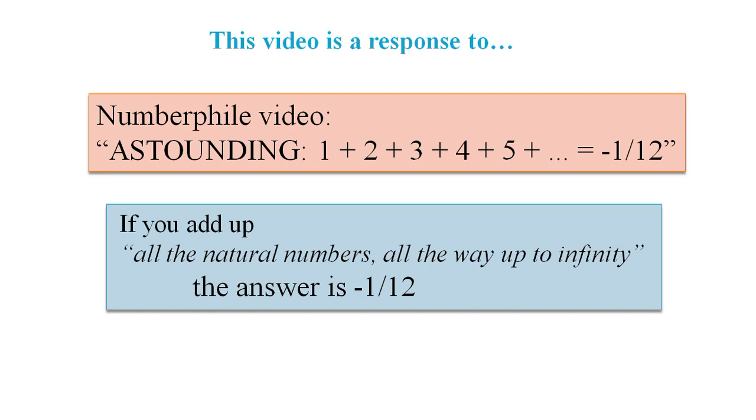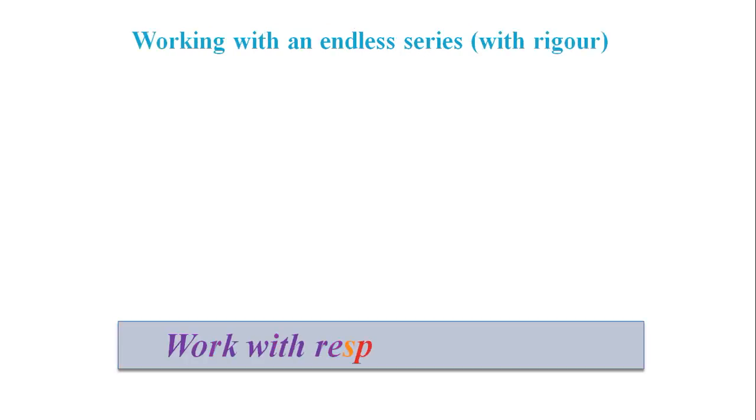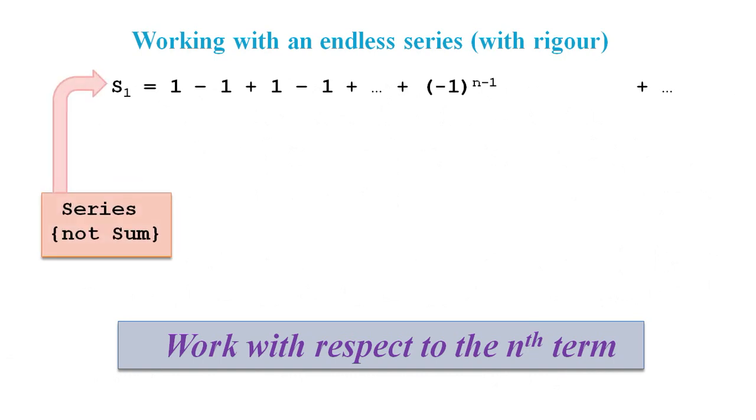First off, when we manipulate a series that does not end, the rigorous approach is to work with respect to the nth term. Here we have the series s1, and the s stands for series, not sum. It will be misleading to call it a sum because the series has no endpoint and so cannot have a sum. We have an unspecified number of terms up to the nth term, and the series continues endlessly after the nth term.